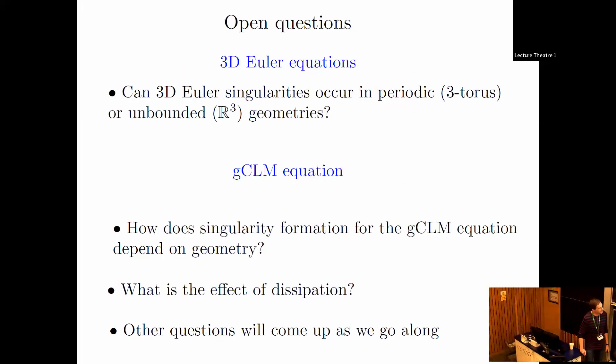The story doesn't end. There are still interesting open questions for 3D Euler. Can singularities occur in periodic or unbounded geometry? That's still open. For GCLM, we can ask how singularity formation depends on geometry—real line versus periodic—and what is the effect of dissipation? I'll have other questions as we go along.